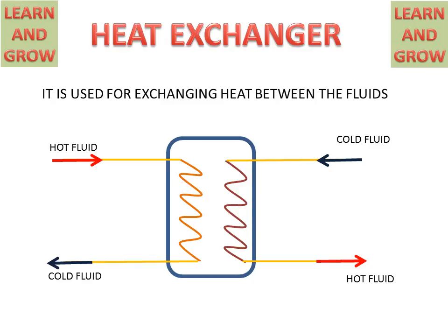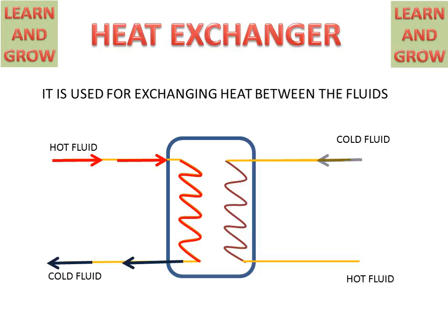So this is the basic concept behind the heat exchanger. Now we will see the working — how it works. Hot fluid comes from the left side pipe and it cools down due to heat exchanging with the second pipe or right side pipe. Cold fluid enters from the right side pipe and becomes hot fluid as the first pipe gives its heat to the second pipe.